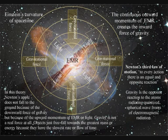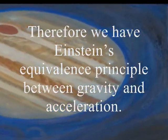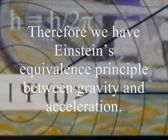In this theory, gravity is a secondary force to the electromagnetic force. Objects just freefall towards the greatest mass or energy because it has the slowest rate that time flows.